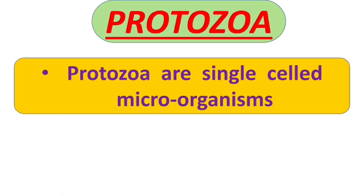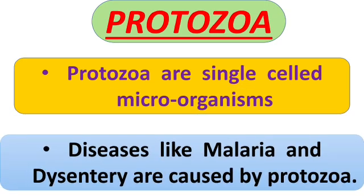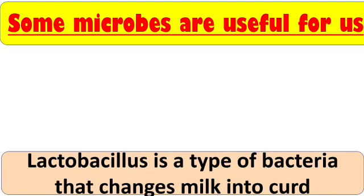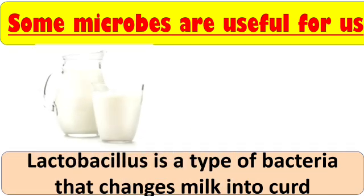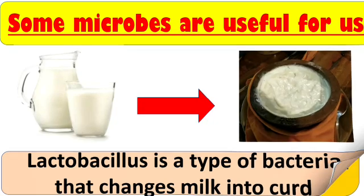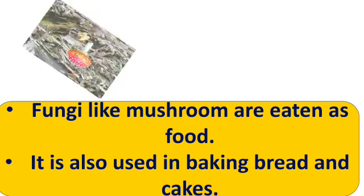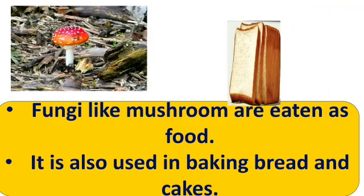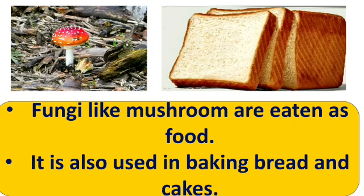Protozoa are single-celled microorganisms. Diseases like malaria and dysentery are caused by protozoa. But some microbes are also useful or helpful for us. Lactobacillus is a type of bacteria that changes milk into curd. Mushrooms are eaten as food, and yeast — a type of fungi — is used in baking breads and cakes.